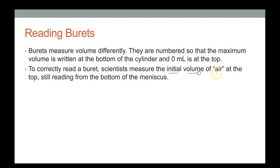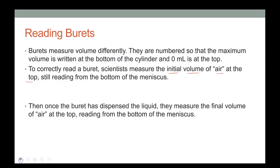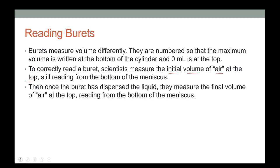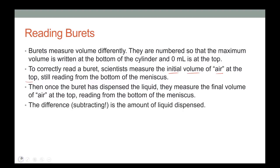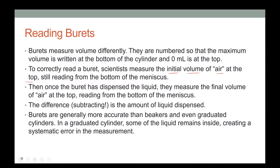To correctly read a burette, read the initial volume of air at the top from the bottom of the meniscus. When done dispensing liquid, measure the final volume of air at the top again, still reading from the bottom of the meniscus. The amount dispensed equals the difference between the two readings.